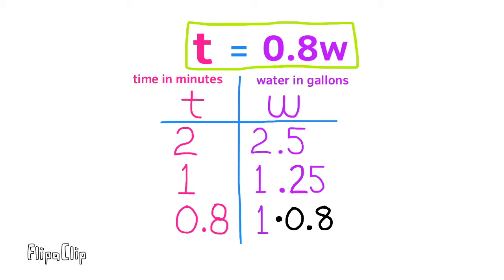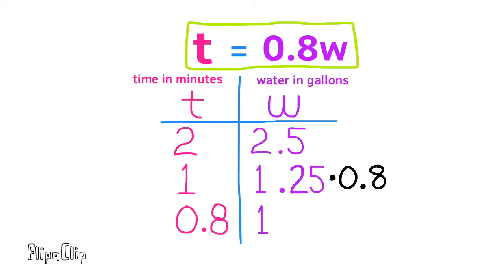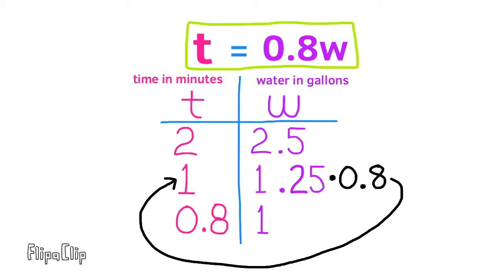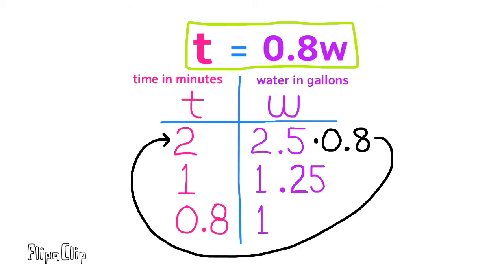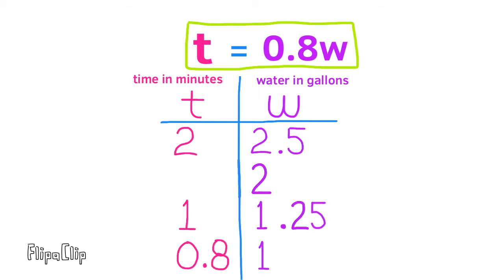For example, 1 gallon × 0.8 = 0.8 minutes. One and a quarter gallons × 0.8 = 1 full minute — meaning it takes one minute for 1.25 gallons to collect in the tub. Two and a half gallons × 0.8 = 2 minutes, meaning it takes two minutes for 2.5 gallons to collect in the tub.